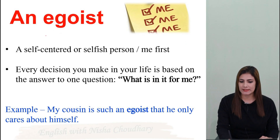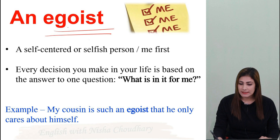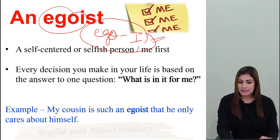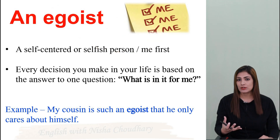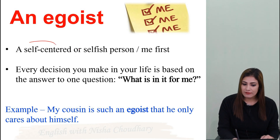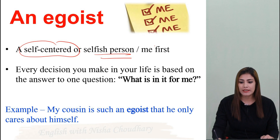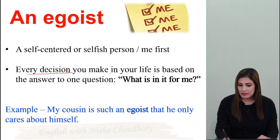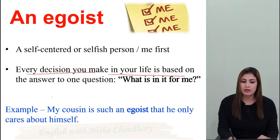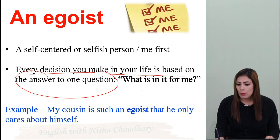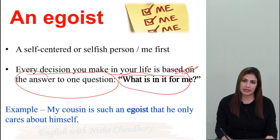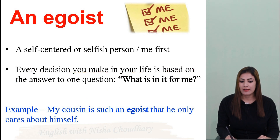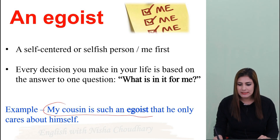Let's start. The first three sessions are completely about personality types. The first word is egoist. Its root word is ego, which means 'I'. So an egoist is a person who only thinks about himself — you can say selfish or self-centered. Every decision this person makes in life is based on the answer to one question: 'What is in it for me?' For example, my cousin is such an egoist that he only cares about himself.